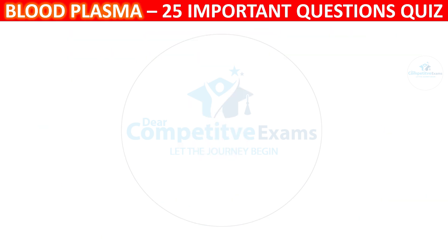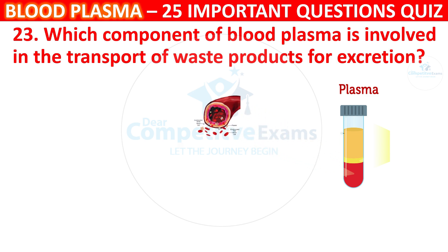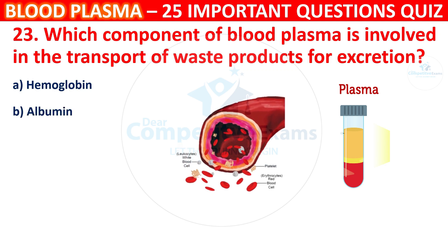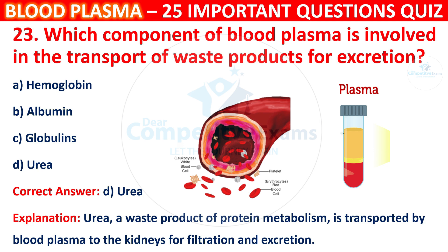Question 23: Which component of blood plasma is involved in the transport of waste products for excretion? Your options are Hemoglobin, Albumin, Globulin, or Urea. The correct answer is D, i.e. Urea. Urea, a waste product of protein metabolism, is transported by blood plasma to the kidneys for filtration and excretion.